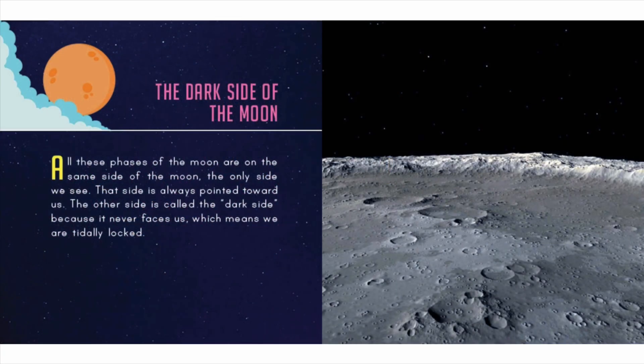The dark side of the moon: all these phases of the moon are on the same side of the moon — the only side we see. That side is always pointed toward us. The other side is called the dark side because it never faces us, which means we are tidally locked.